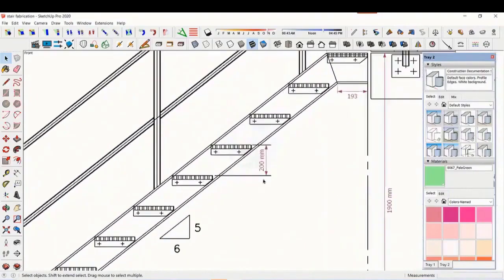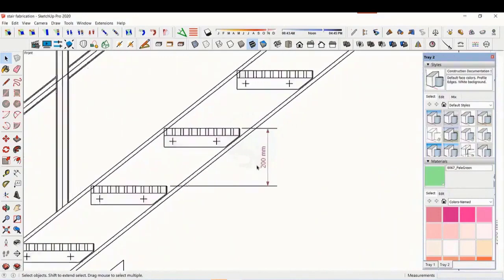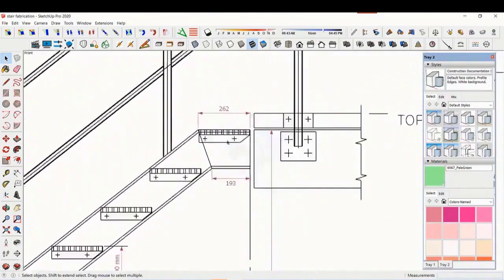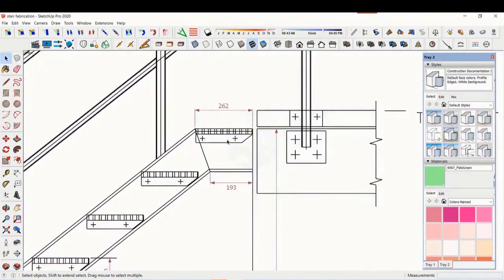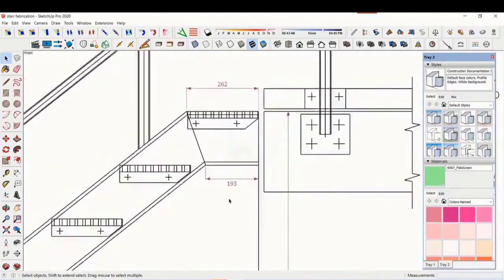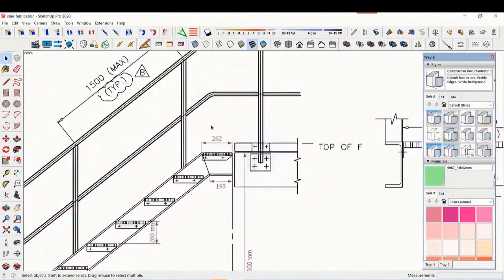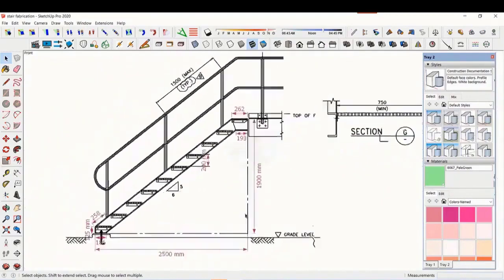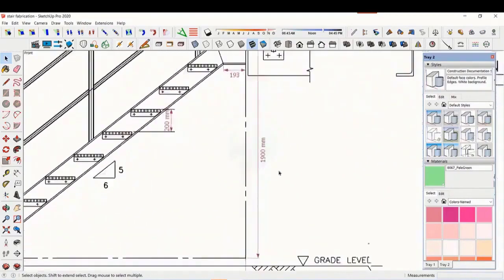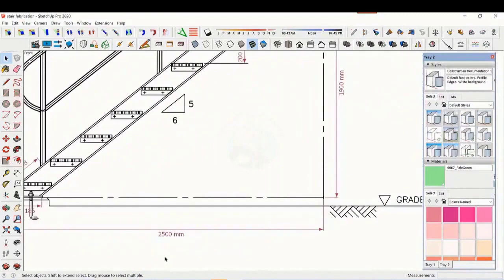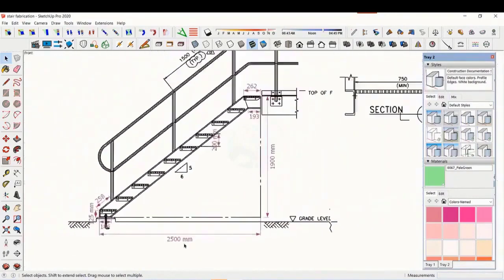The basic structure is made from ISMC 200. The height of the staircase is 1900 mm and the length is 2500 mm. The width of the staircase is 750 mm.